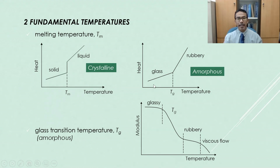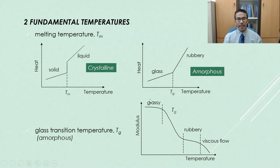For amorphous material, as heat is increased the temperature also increases until it reaches the glass transition temperature, beyond which further heat will continue to increase temperature. Below the glass transition temperature, the material is in a glassy condition, whereas above it the material is in a rubbery or flexible condition. A diagram showing modulus versus temperature for amorphous material shows that as temperature increases, modulus generally decreases. This curve can be divided into zones: a glassy zone, a rubbery zone, and a zone where the material undergoes viscous flow.